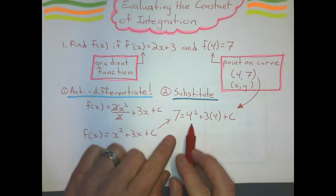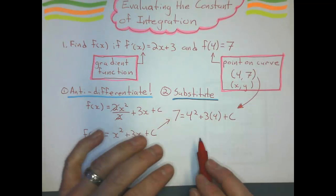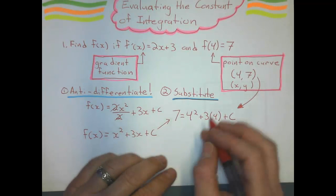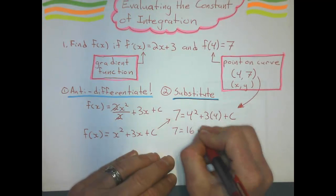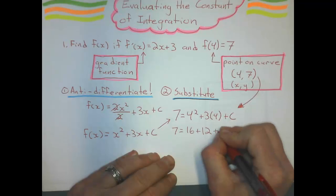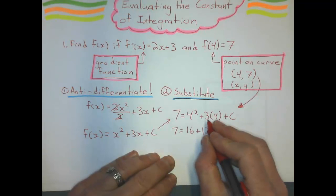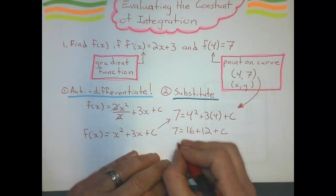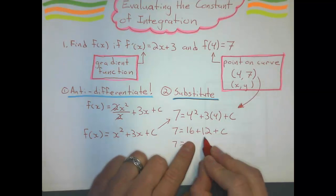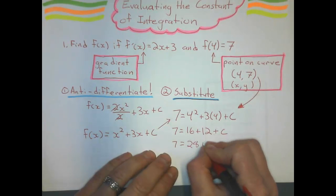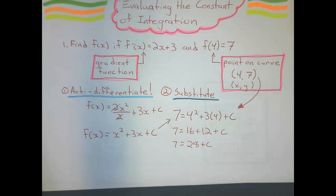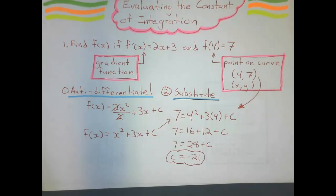We can solve this - actually we can probably solve this on the graphics calculator, but since they're all nice whole numbers, it's not too bad. I get 16+12+c, so I get 28+c. So c is going to give me negative 21 for my constant, and now I can write my equation.